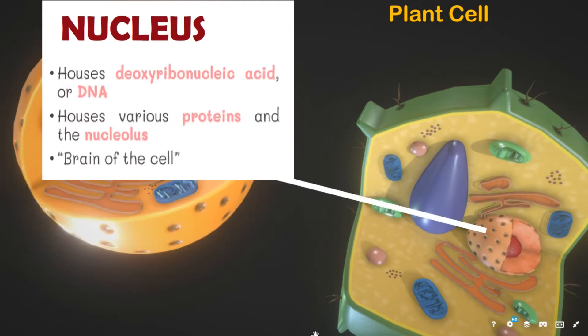The cell membrane is made up of two layers of phospholipids, or a phospholipid bilayer. The nucleus houses deoxyribonucleic acid, or DNA for short, which is the hereditary material that carries genetic instructions in all living things. It also houses various proteins. The nucleus is considered the brain of the cell because it directs all the activities of the cell.